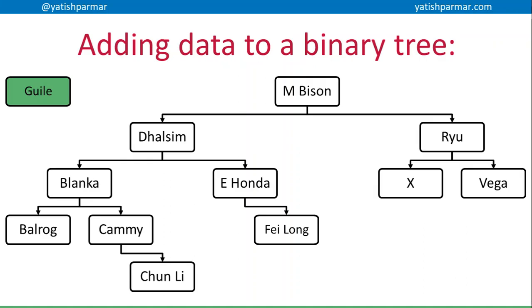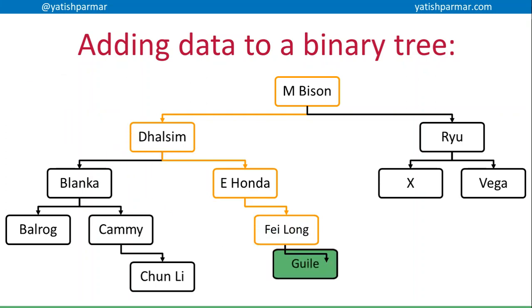If I wanted to add some data to my binary tree, I'm going back to my Street Fighter tree. I want to add Guy into it. I start by comparing Guy to my root node - G is smaller than M, so I follow the left pointer. G is larger than D, so I follow the right pointer. G is larger than E, so again I follow the right pointer. Now G is larger than F, and I'm at the end of my tree, so I need to create a new pointer to the right, and that's going to point to my new node.